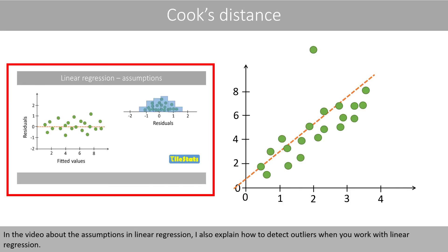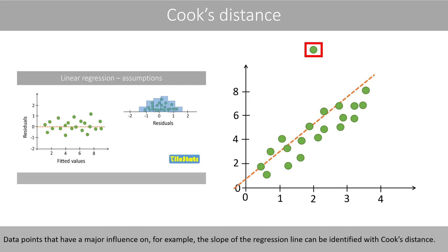In the video about the assumptions in linear regression, I also explain how to detect outliers when you work with linear regression. Data points that have a major influence on, for example, the slope of the regression line, can be identified with Cook's distance.